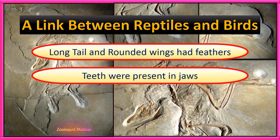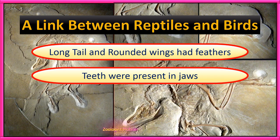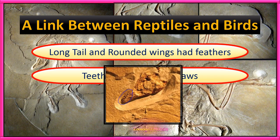Similarly, teeth were present in the jaws, and that is a unique characteristic of Archaeopteryx because birds don't have teeth in their beaks. Here you can clearly see that the beak or mouth of Archaeopteryx had teeth.